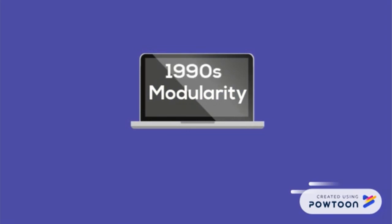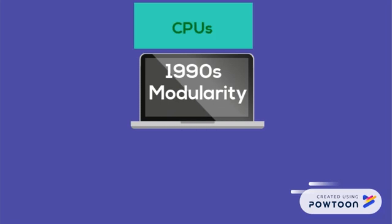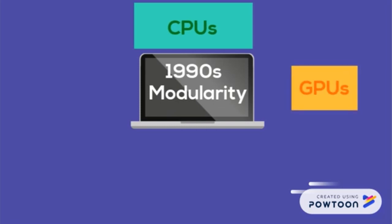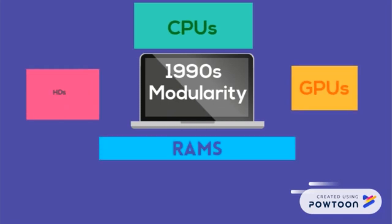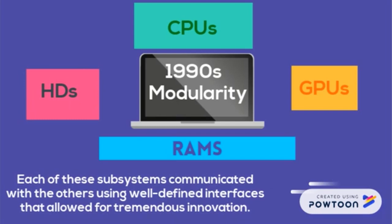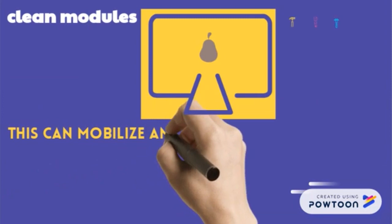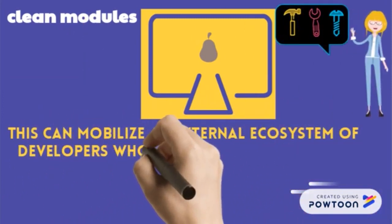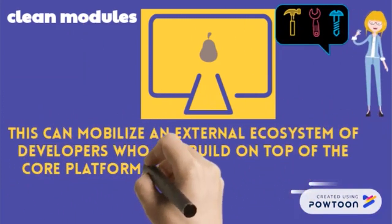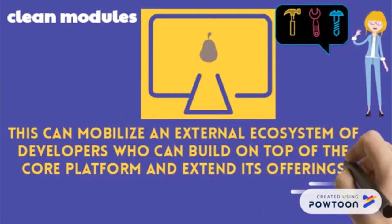The power of modularity is one of the reasons the personal computer industry grew so quickly in the 1990s. The key components of PC systems — CPUs, GPUs, RAM, and HDDs — communicated with each other using well-defined interfaces that allowed for tremendous innovation. Platforms should decompose systems into clean modules, which can mobilize an external ecosystem of developers who can build on top of the core platform and extend its offerings into new markets.